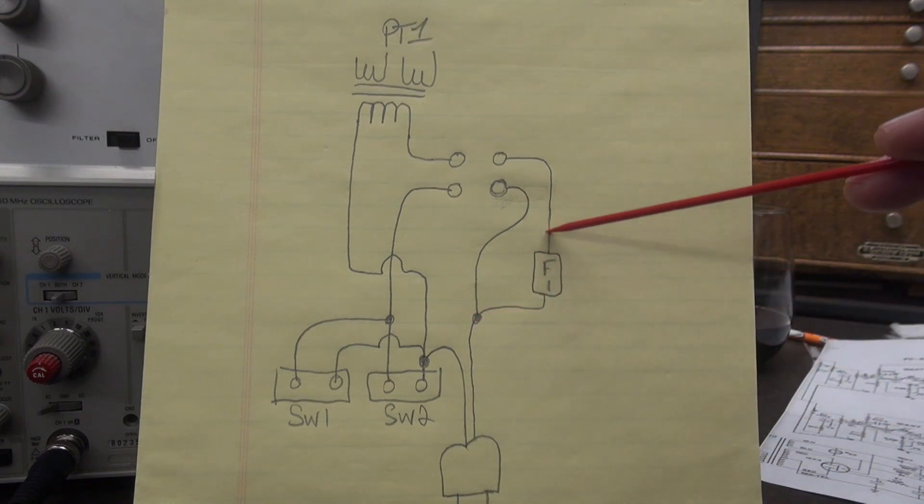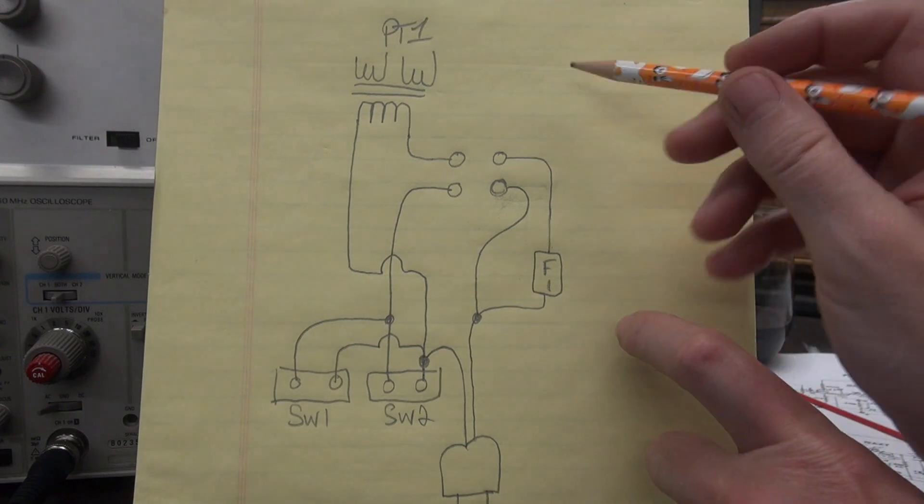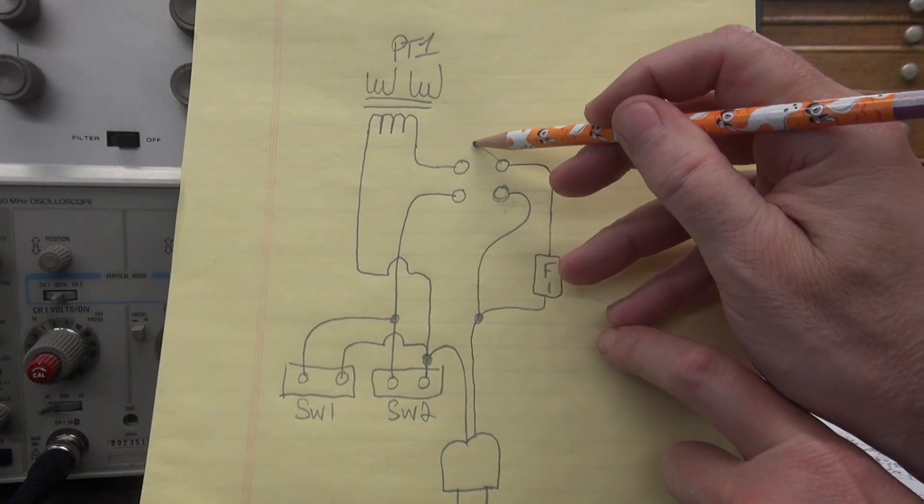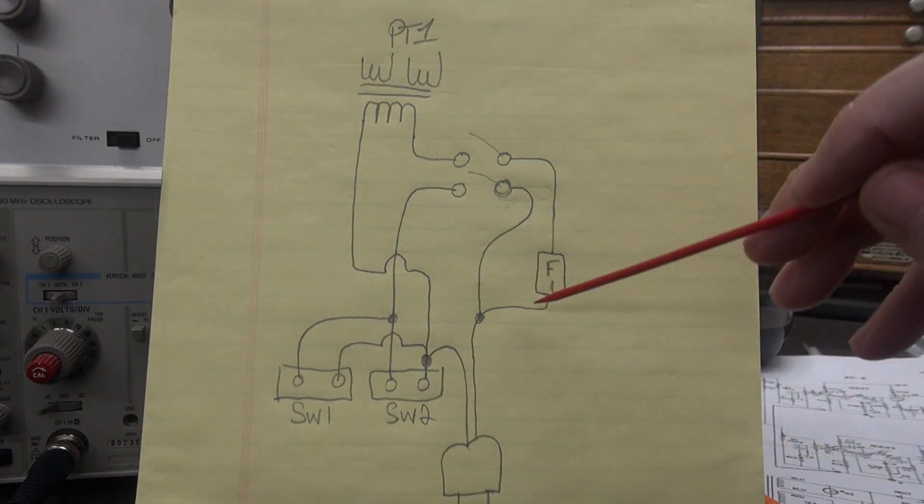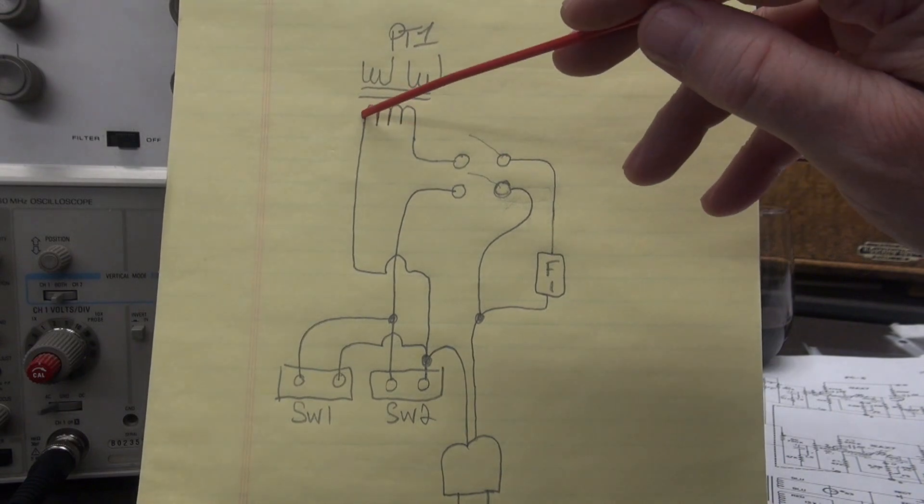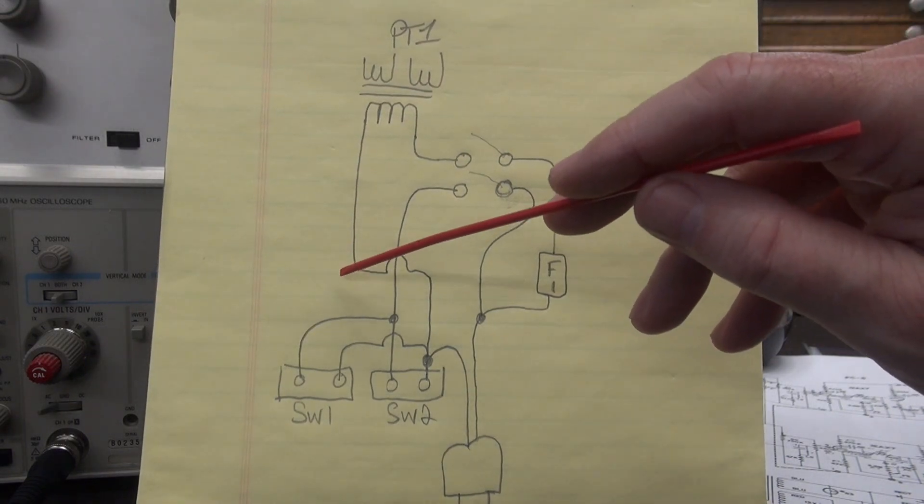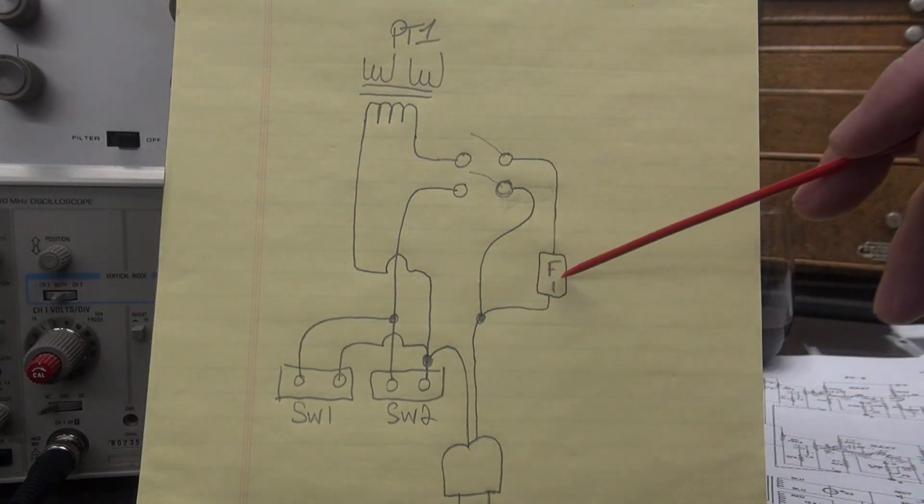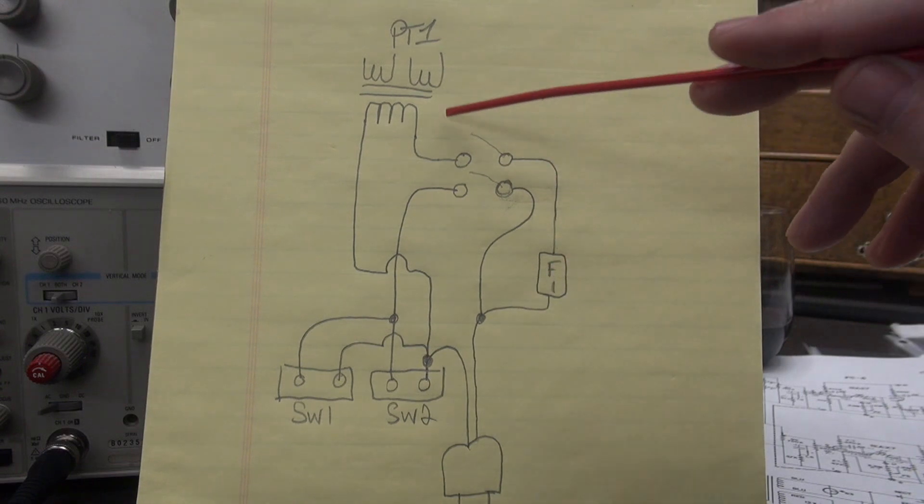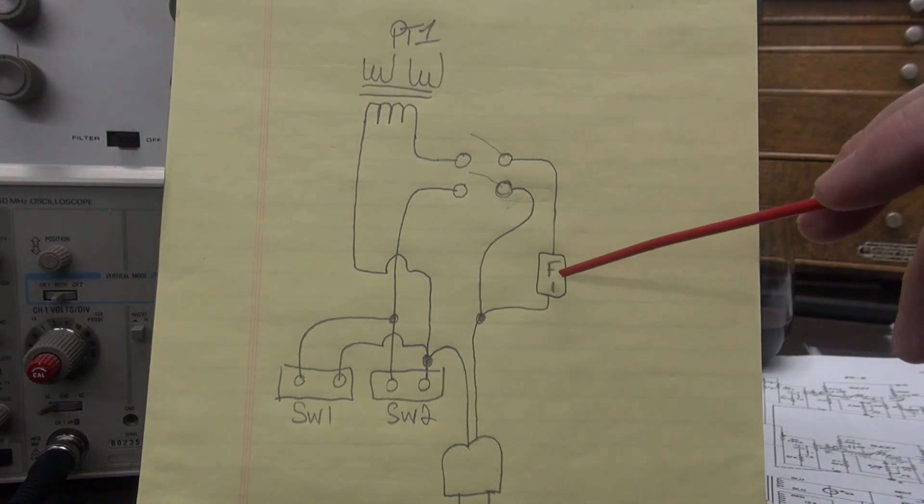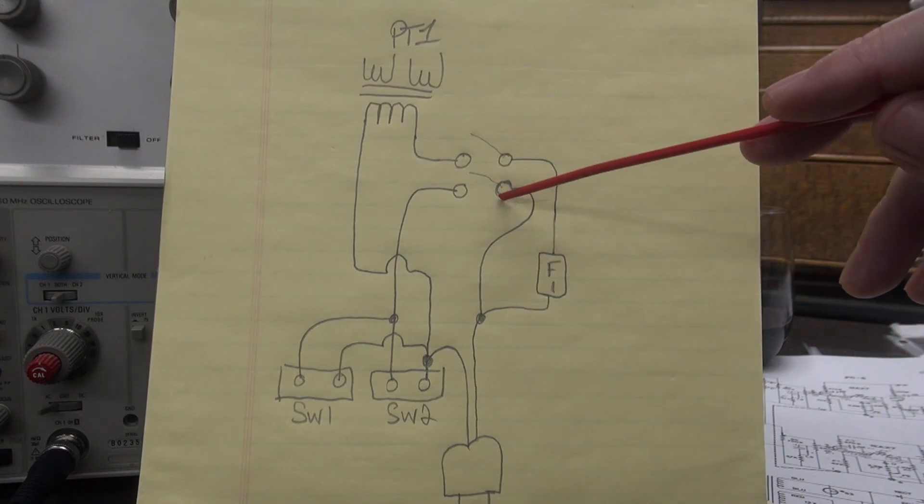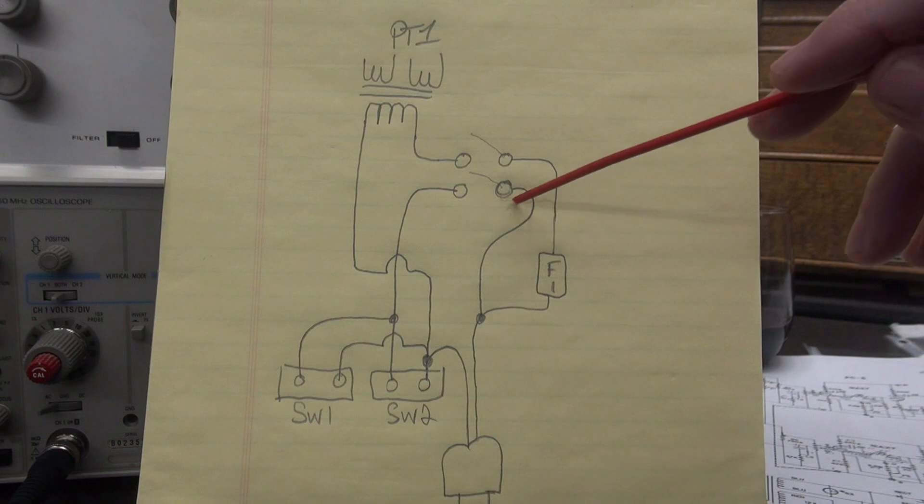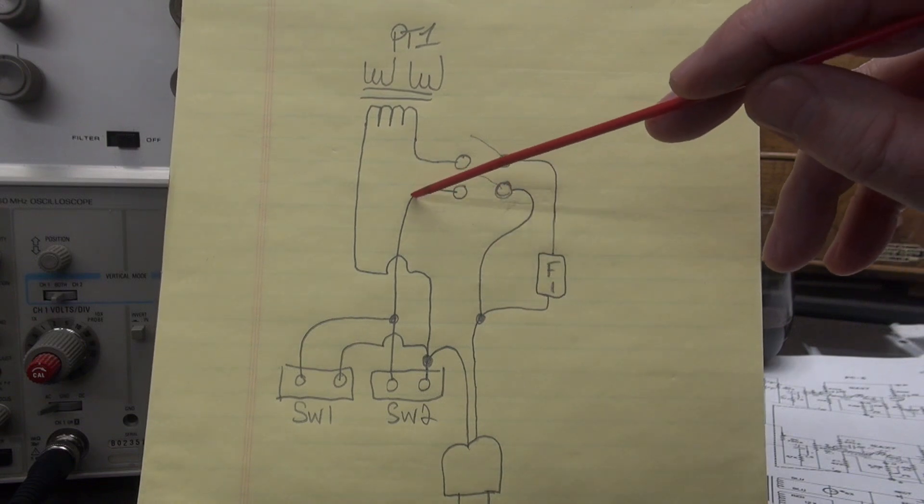So one side of our line comes in, goes through the fuse, goes up to this side of the switch. There's a switch. Goes through the fuse, switch, and then that hits the primary of the preamp. So that is a low current feed. So the transformer is protected by this fuse.